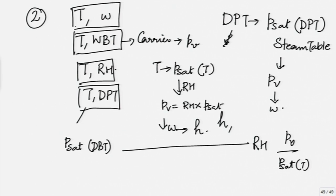If I have given T and omega, I will use the relation between omega and PV and get PV. I can directly get using T and omega what is the enthalpy and using T I will get PV sat and with these two ratios, I will now get my relative humidity. Given any combination here, I would be able to get my necessary quantities and go ahead.